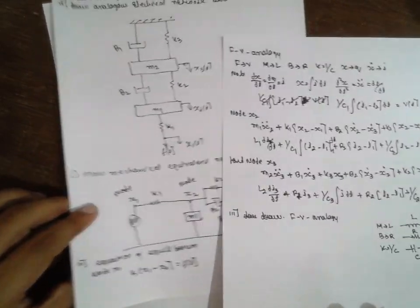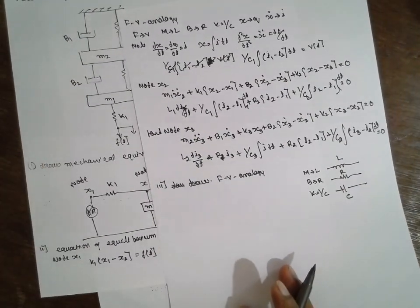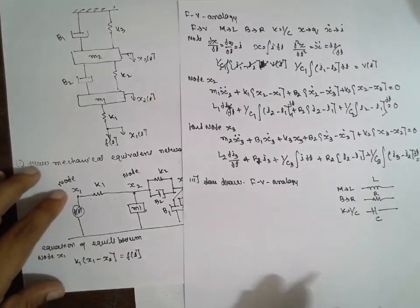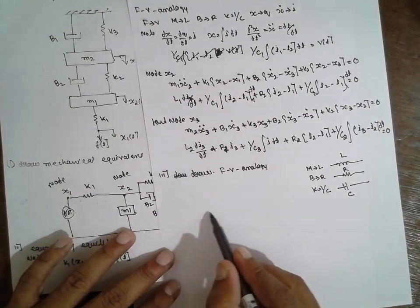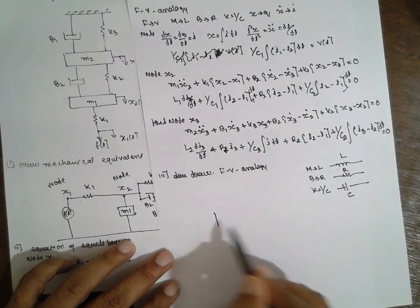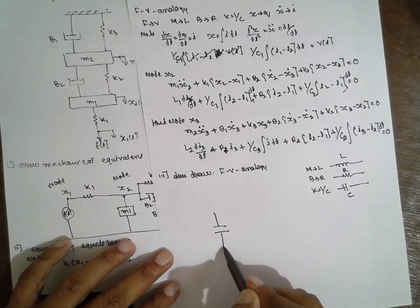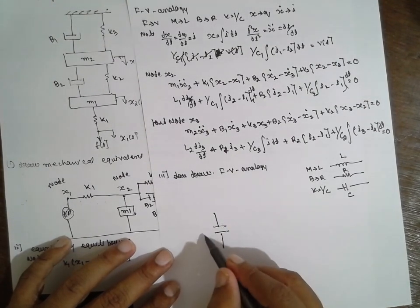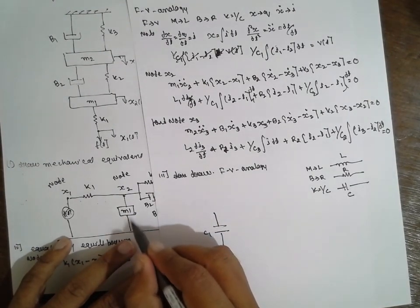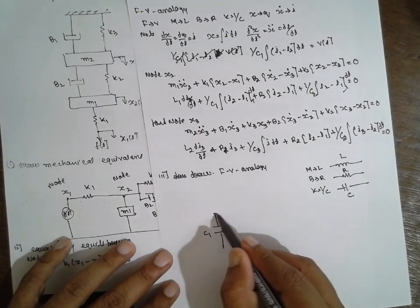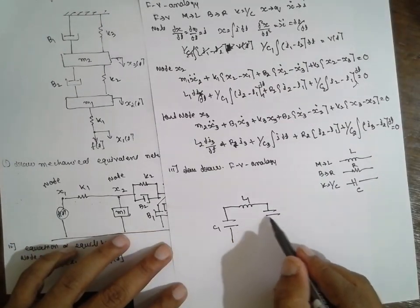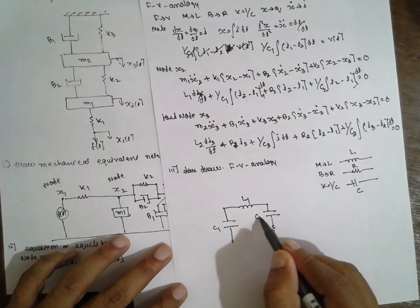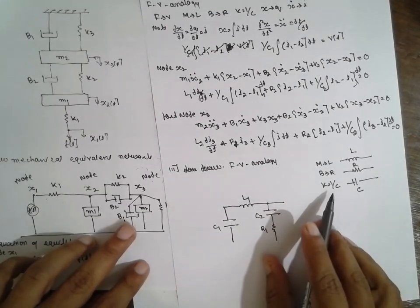Here, whatever the horizontal line is, it becomes parallel, and parallel lines become horizontal lines. This is an important part. So horizontal becomes parallel: K becomes C, capacitance C1 is placed. The vertical becomes horizontal in terms of inductance L1, and elements become parallel — inductance, resistance, C2, R1 — everything will be in series.